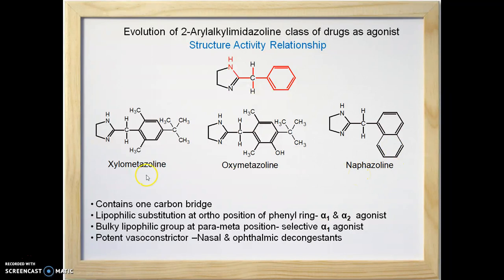Since these three compounds — xylometazoline, oxymetazoline, and naphazoline — are alpha 1 agonists, they belong to the 2-aryl alkyl imidazoline class. They are potent vasoconstrictors and are therefore used as nasal and ophthalmic decongestants.